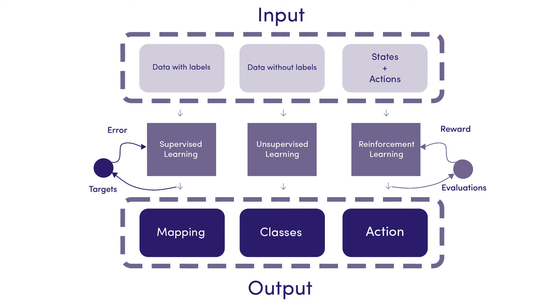Reinforcement learning is widely used in building AI for playing computer games. A prominent example is Google's computer program AlphaGo Zero, which received massive media attention by defeating the South Korean world champion in the Asian game of Go — a feat that used to be considered beyond the reach of even the most sophisticated computer programs.